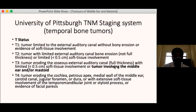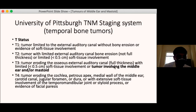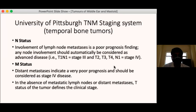T1 tumours are confined to the external auditory canal; T2 are limited to the external auditory canal with limited bone erosion; T3 tumours involve the middle ear and mastoid with limited soft tissue involvement; T4 tumours erode the petrous apex, medial wall of middle ear, carotid canal, jugular foramen, dura, and adjacent soft tissues. Any nodal involvement is a poor prognostic finding and automatically places the patient in stage 3 disease.